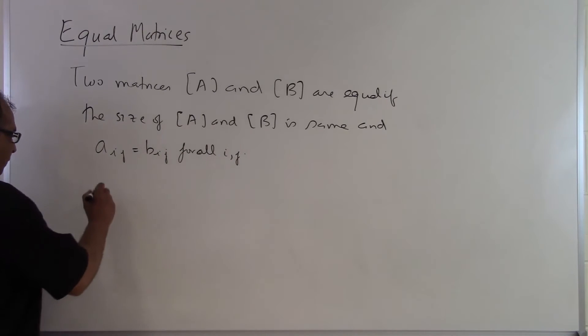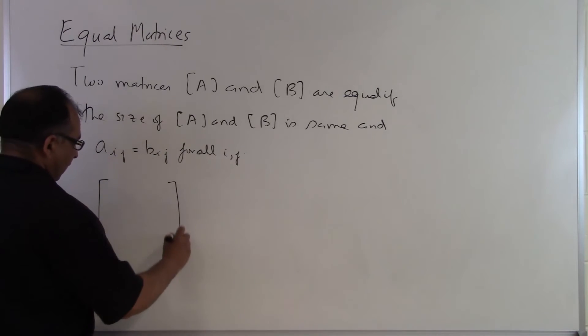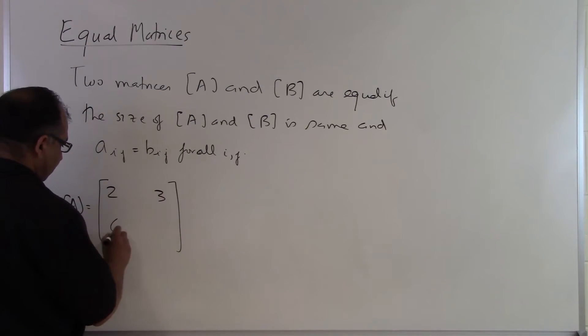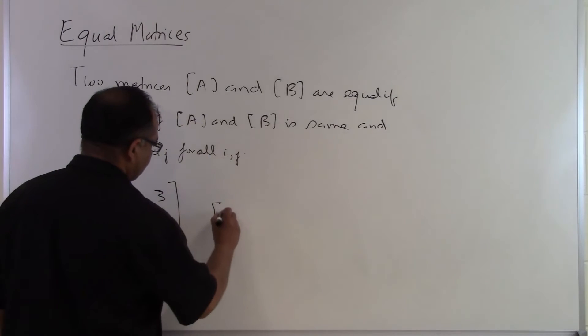So let's look at an example. Somebody says hey I got this A matrix here. Two, three, six, seven. And then I have a B matrix here.